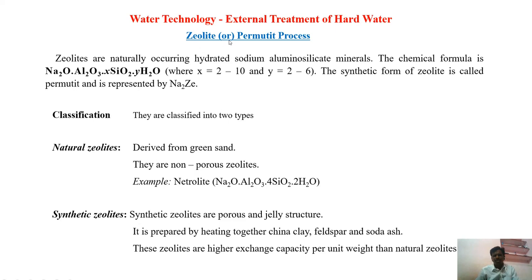There are two types of zeolites. Natural zeolites are derived from green sand and are non-porous — an example is nitrolyte. Synthetic zeolites are prepared in the laboratory and have a more porous, jelly-like structure. To prepare synthetic zeolites, we heat china clay with feldspar and soda ash. These synthetic zeolites have a higher exchange capacity per unit weight than natural zeolites, meaning they can treat a greater volume of water.